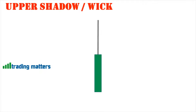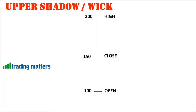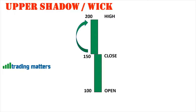Let's see the upper shadow and rejection of higher prices. This is a green candle with an upper shadow. For a green candle, the bottom is the open, the top of the body is the close, and the peak is the high. This candle opened at 100 and at the end of the session closed at 150. The high of 200 indicates that at some point during the session, buyers pushed the market up to 200, resulting in the formation of a green candle. At that high price of 200, sellers entered the market and pushed the price back down to 150.